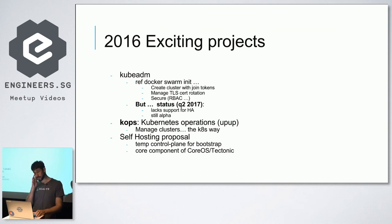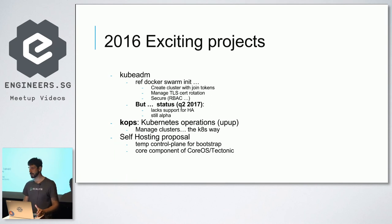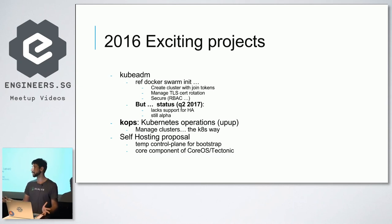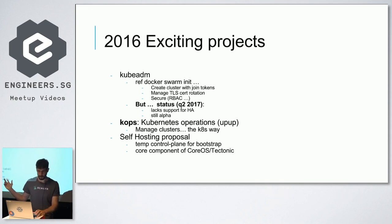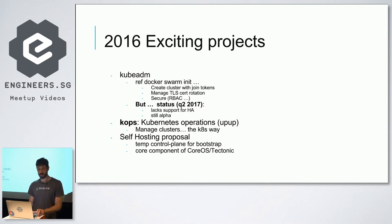Then in 2016, a lot of exciting projects emerged. After Docker announced Swarm and highlighted the issue that many people were facing with the initialization part of Kubernetes — with Swarm you just had to do 'docker swarm init' and there you go — the Kubernetes community picked that up to build additional things, such as kubeadm.